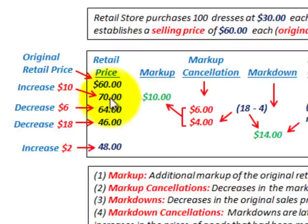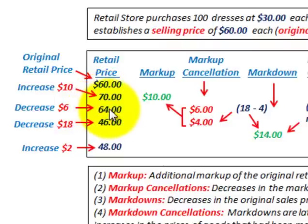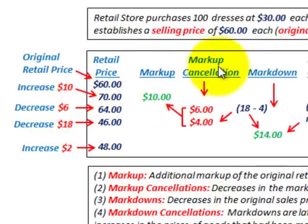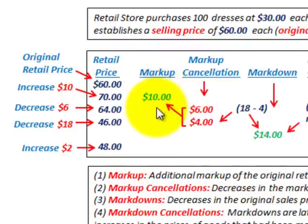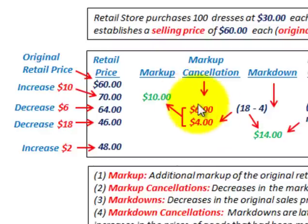The dresses weren't selling that well, so they decreased the price from $70 to $64 each — a decrease of $6. That is considered a markup cancellation. We had the markup amount of $10, so we cancel out that decrease of $6 against the markup. That $6 decrease is a markup cancellation.